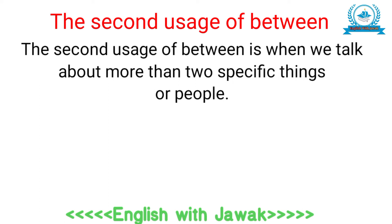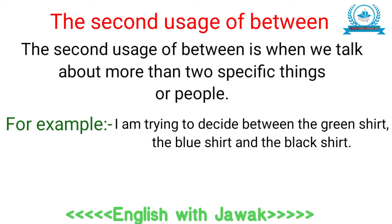between کا دوسرا usage اس صورت میں ہے جب ہم دو سے زیادہ چیزوں یا لوگوں کی بات کریں۔ اس صورت میں اگر چیزیں یا لوگ specific ہوں تو between کا use کریں گے۔ مثال: 'I'm trying to decide between the green shirt, the blue shirt and the black shirt.' یہاں shirts مخصوص ہیں — ایک green، ایک blue، ایک black — اس لیے تین چیزیں ہونے کے باوجود between کا use ہوا۔